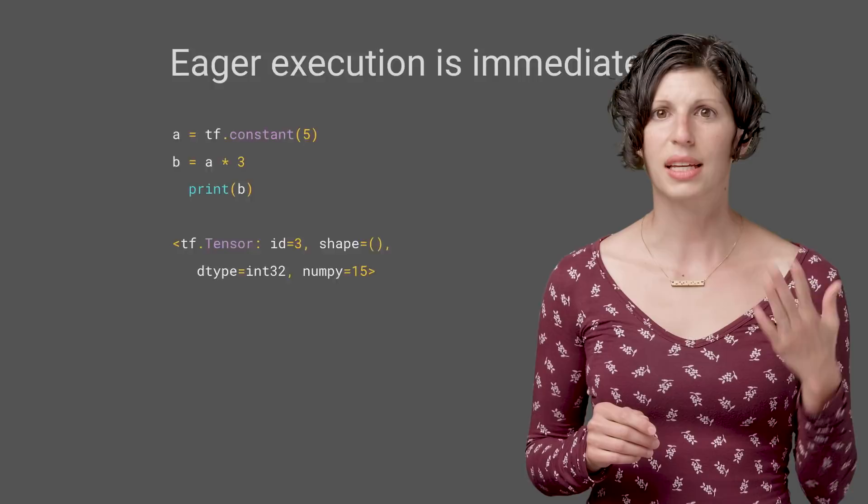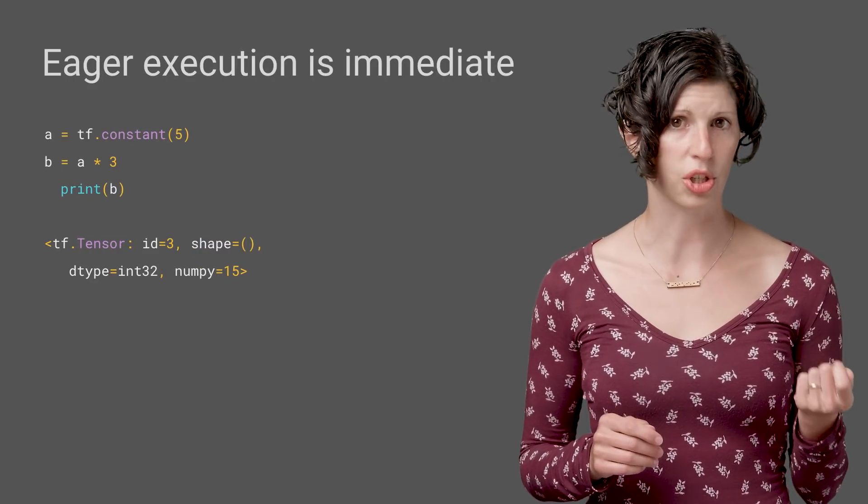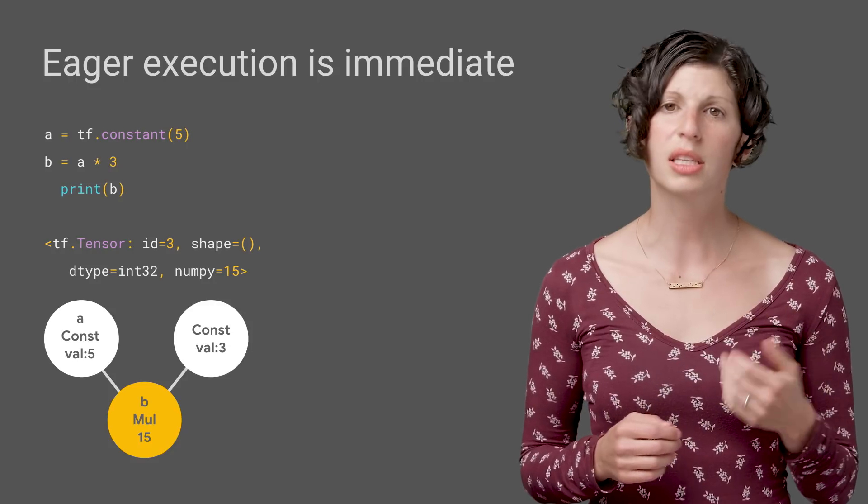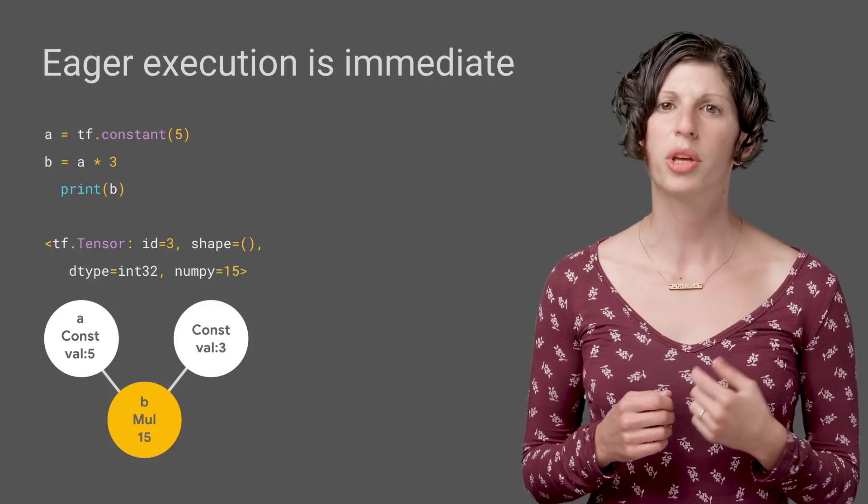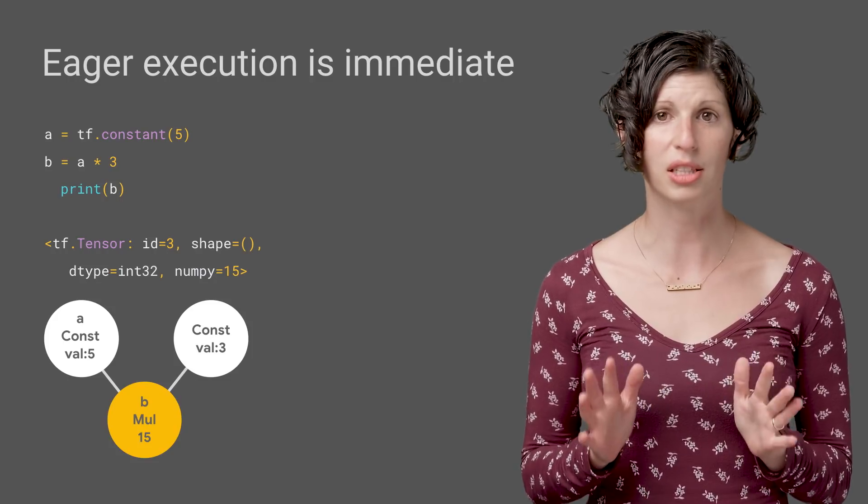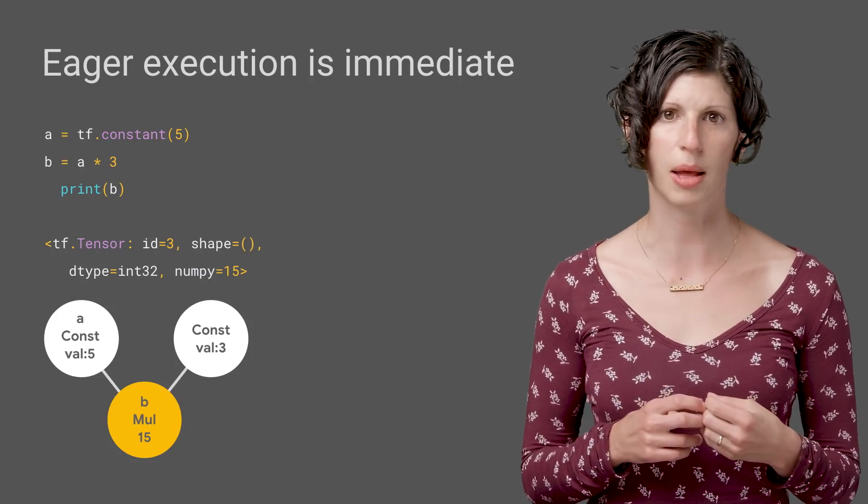The way it does that is, rather than deferring execution of your TensorFlow graph, it runs ops immediately. The result is that you can write your models in eager while you're experimenting and iterating, but you still get the full benefit of TensorFlow graph execution when it comes time to train and deploy your model at scale.